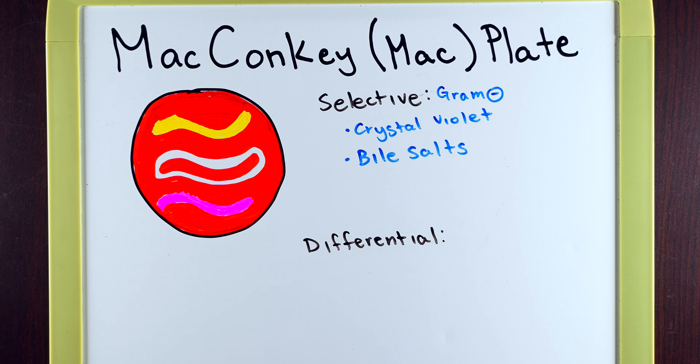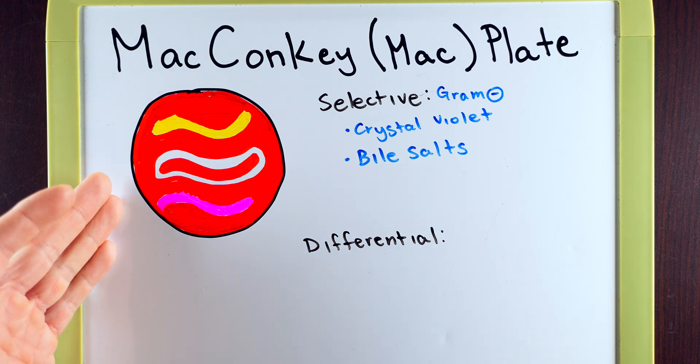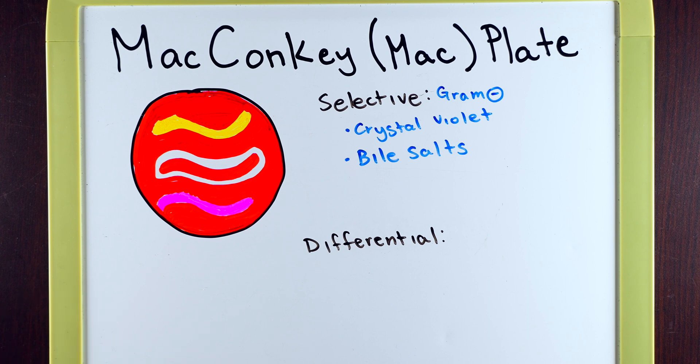Therefore, we can assume that if we have bile salts on the plate, it will get rid of any gram-positive bacteria, but allow for any gram-negative bacteria to survive and grow.